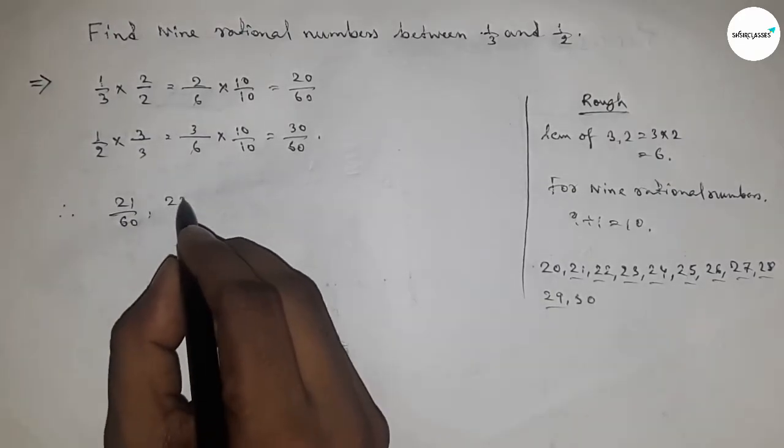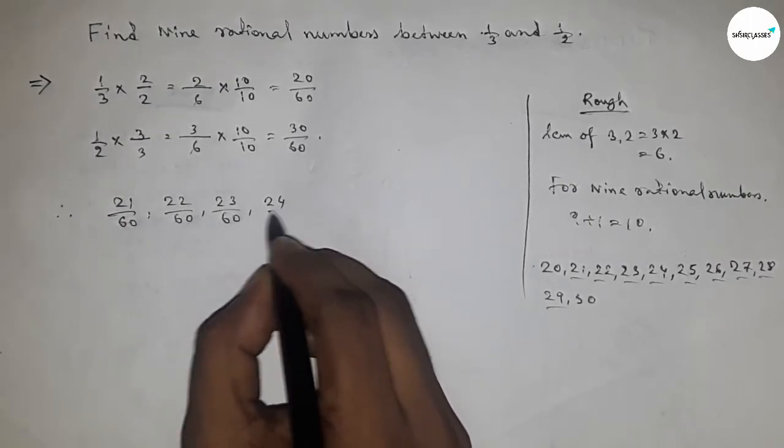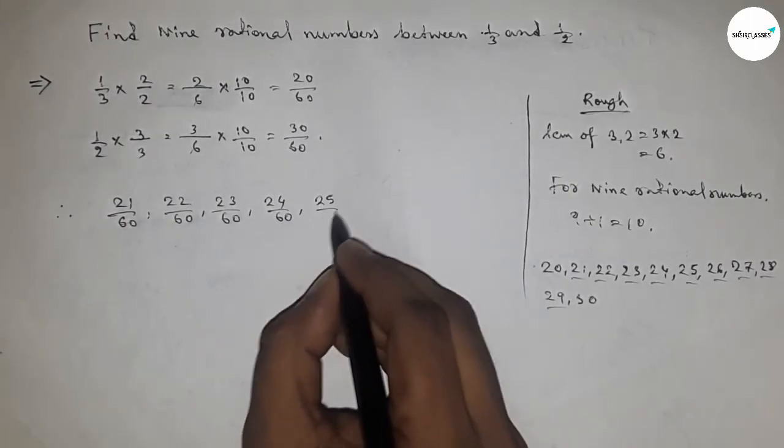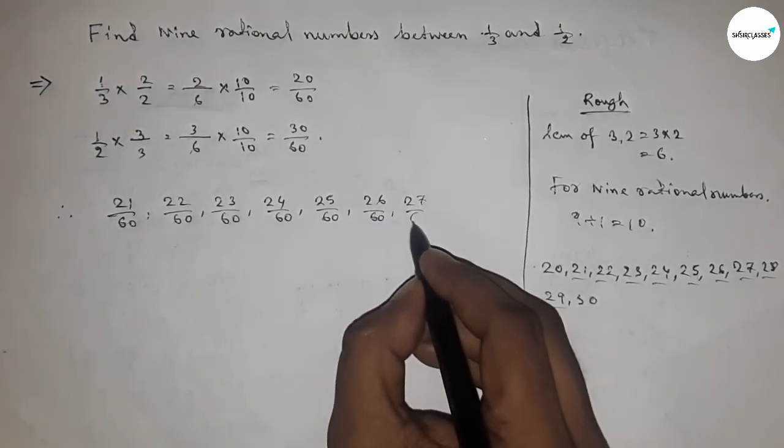21/60, then 22/60, 23/60, 24/60, 25/60, 26/60, 27/60,